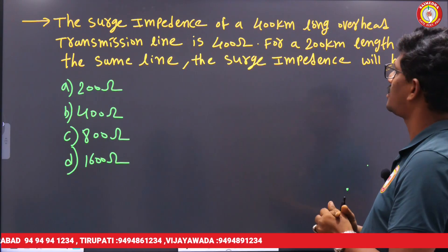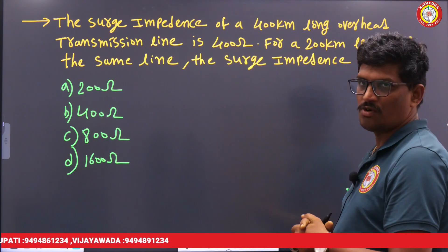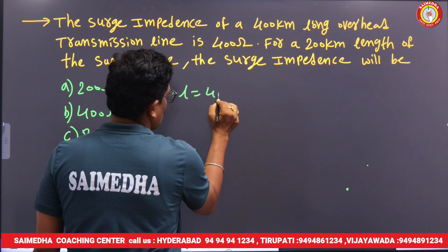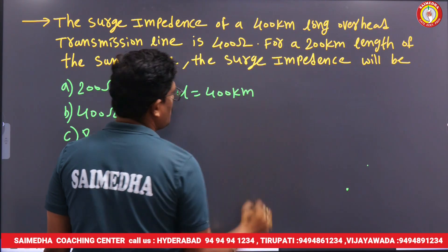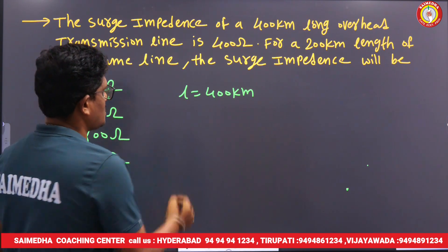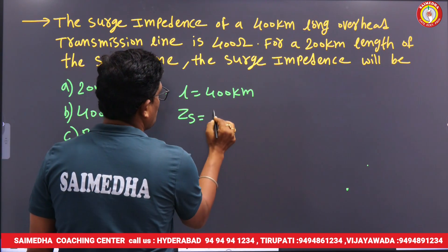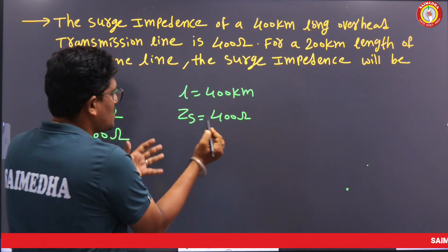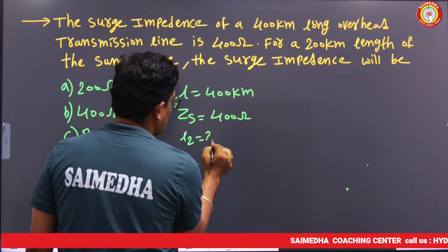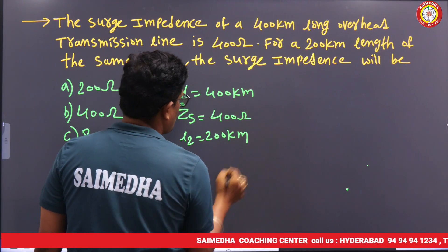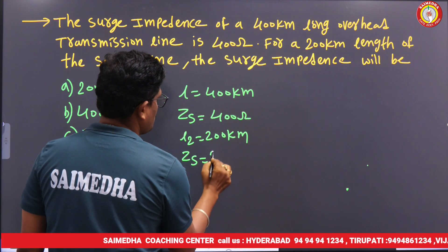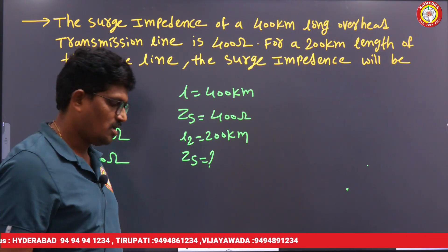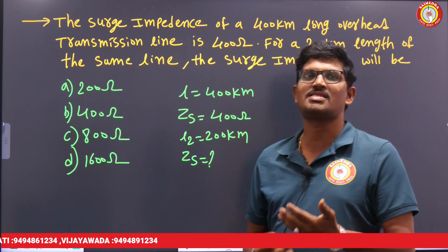The surge impedance of a 400-kilometer long overhead transmission line is 40 ohms. For a 400-kilometer length, the surge impedance value is 40 ohms. For a 200-kilometer length, what is the surge impedance? This question is given in the GATE examination. How do we solve this question?